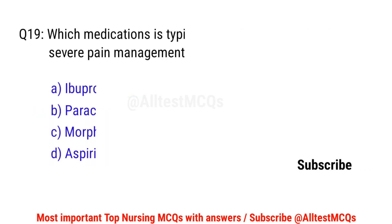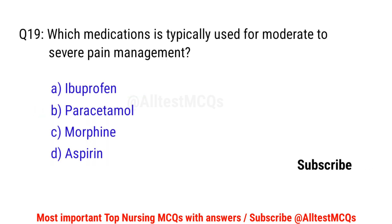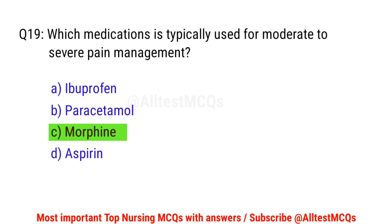Question number 19. Which medication is typically used for moderate to severe pain management? The correct option is C: Morphine.